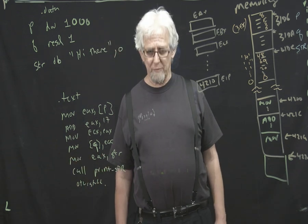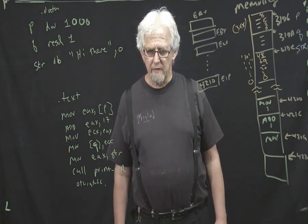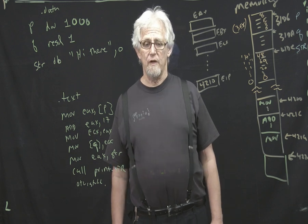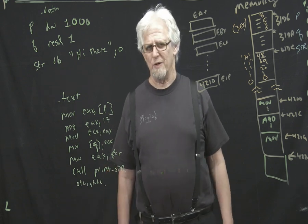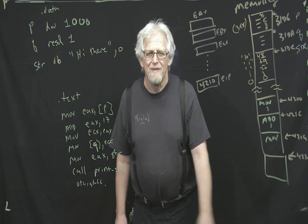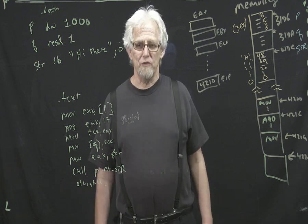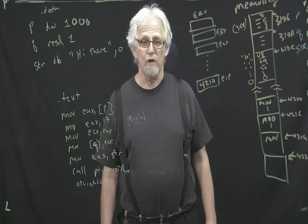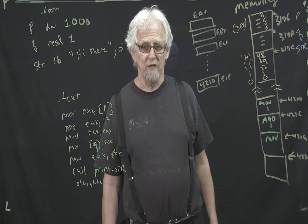Good morning, assembler class. This should be your first lesson on computer architecture and assembler. I've put up here on the glass board — it's called a glass board because it's actually like a blackboard or whiteboard except it's made out of glass. It's not related to me being Professor Glass. In this glass board lecture, this is your first introduction to how the assembler, or how the machine, actually executes code and assembler programs, and a little bit how you write them.